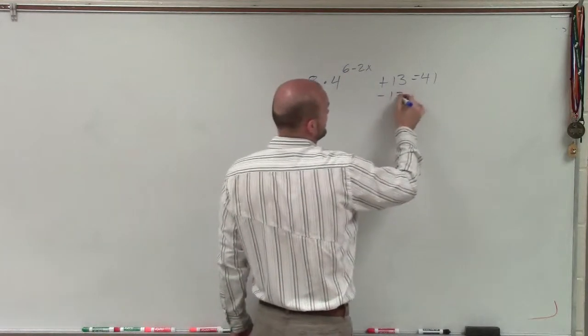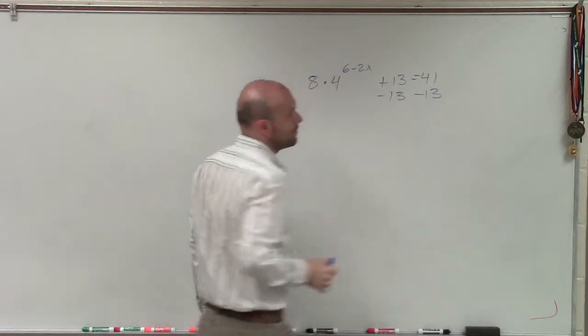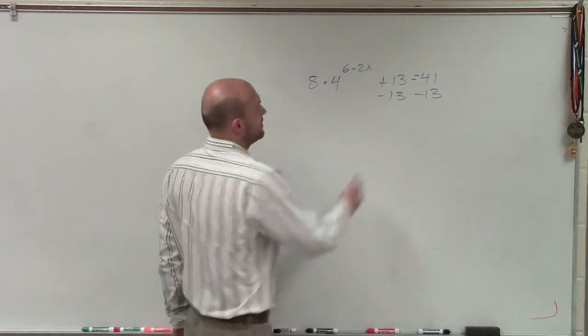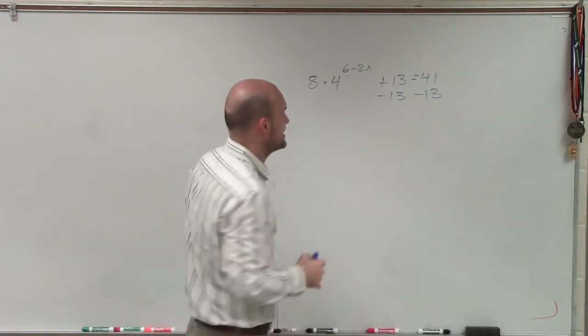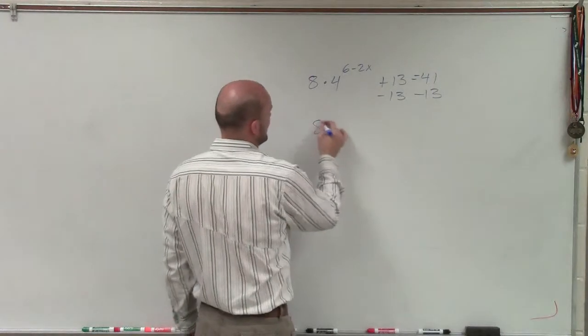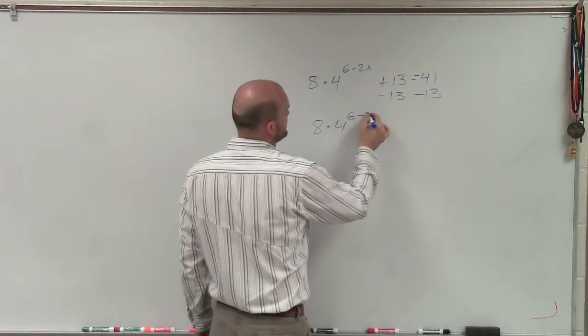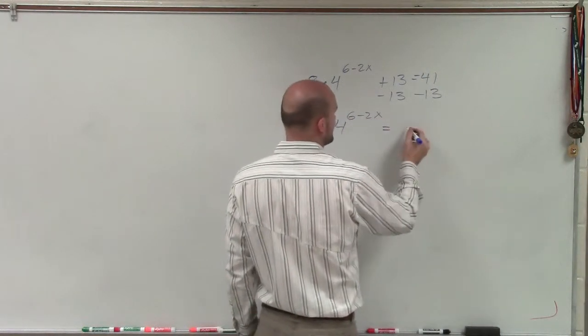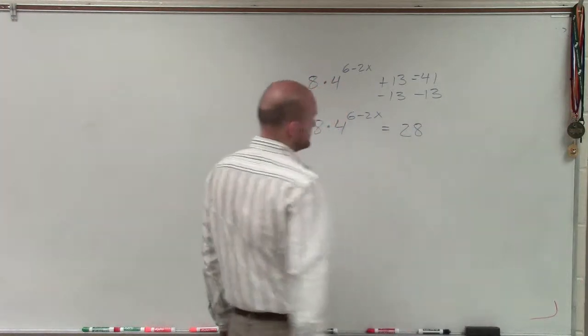So to do that, I'm going to first subtract 13 on both sides. And by subtracting 13 on both sides, you can see that I'm going to have a 28. So I have 8 times 4 to the (6 minus 2x) is going to equal 28.